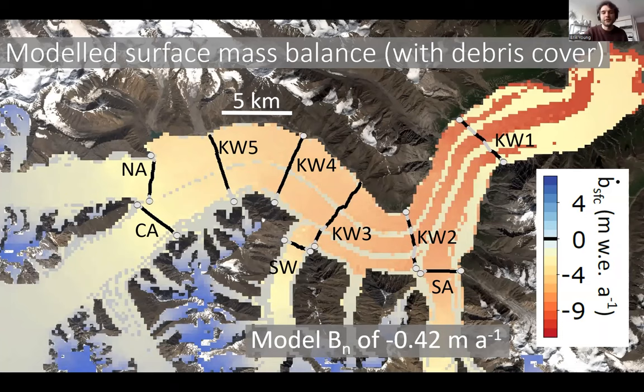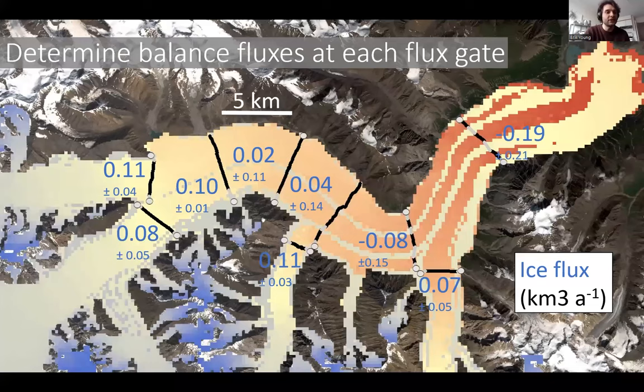We calculated the balance fluxes: if the glacier were totally in sync with the regional climate, any mass deposited upstream has to flow through a downstream flux gate. Two negative values tell us that if totally adjusted to the 2007–2018 climate, ice would have to flow uphill — obviously impossible — which really means the terminus would have to be located quite a ways upstream. We now know the actual fluxes and what they should be had the glacier been totally adjusted. I'd like to compare those two things directly.